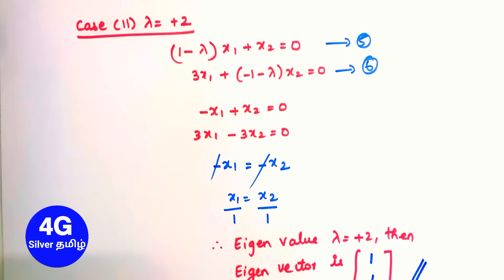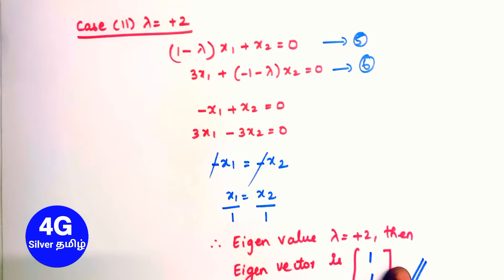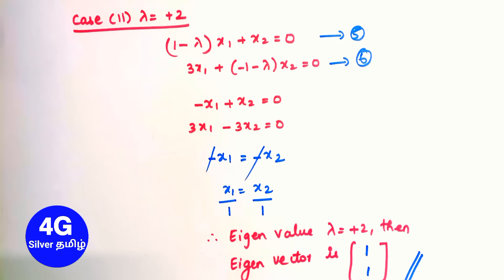Problem complete. We found the eigenvalues and eigenvectors of the 2x2 matrix. Next video will cover the next method. Thank you.